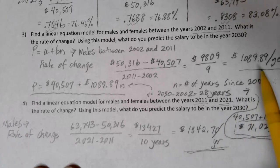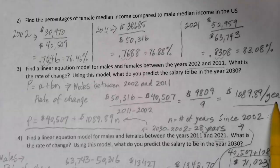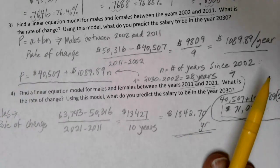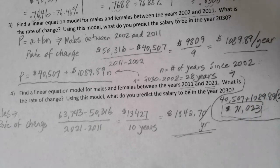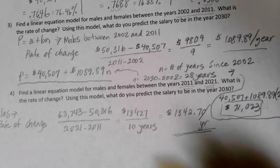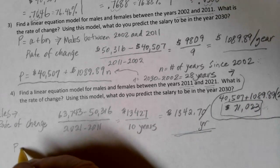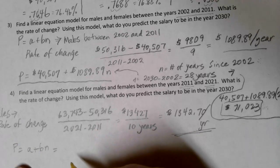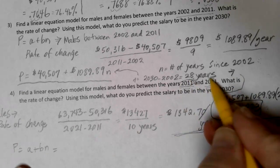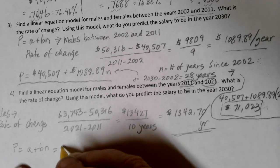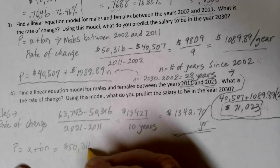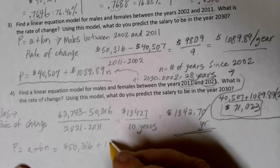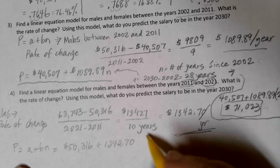Comparing to the 2002–2011 period where income was growing by $1,089 per year, now it's growing by $1,342 per year — salaries have been increasing a little more quickly. Our equation becomes P equals $50,316 plus $1,342.70 times N, where N is the number of years since 2011, because that's the oldest value in this range.